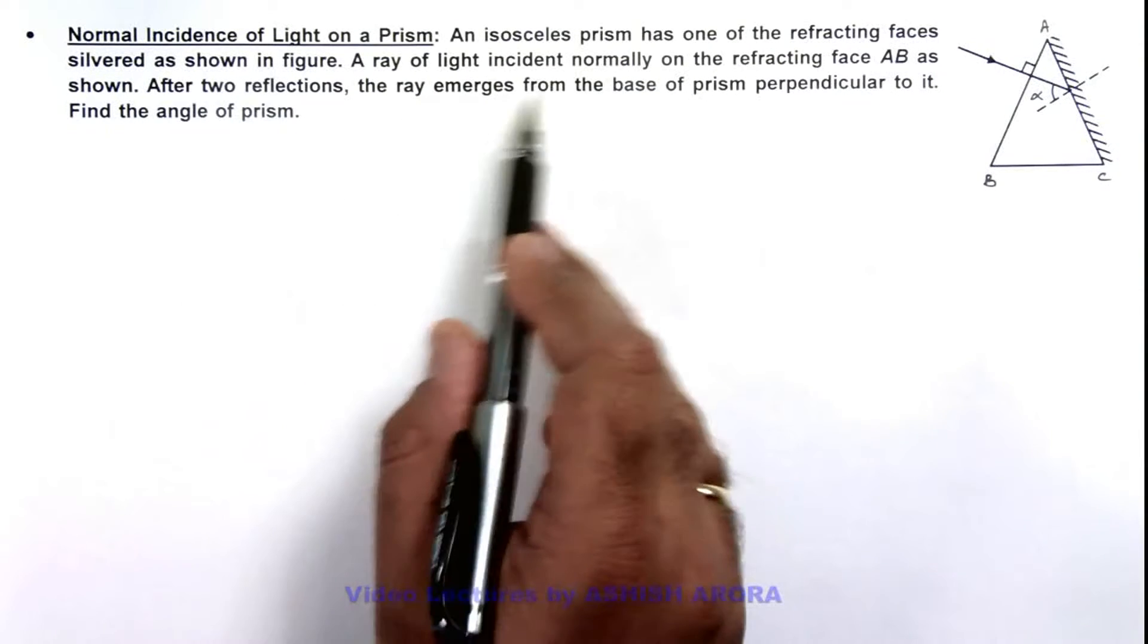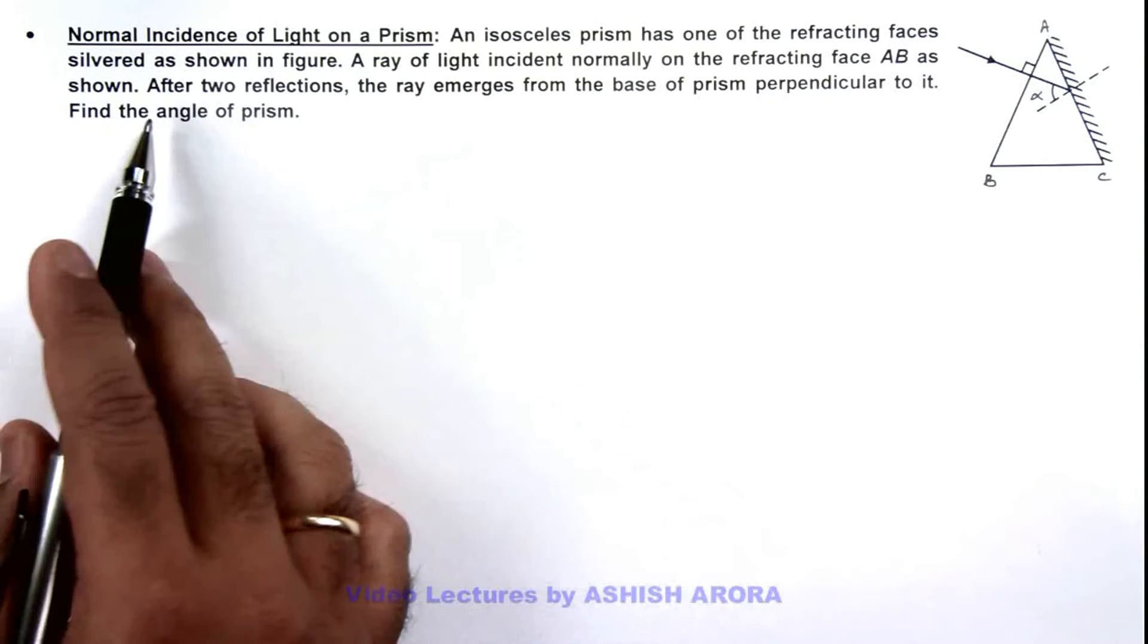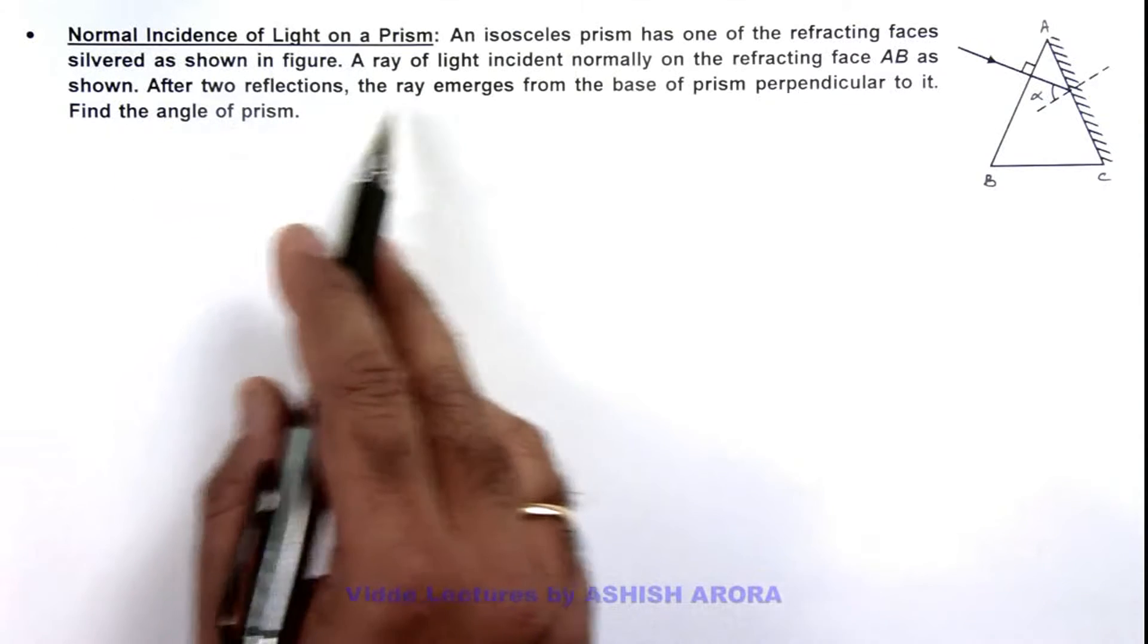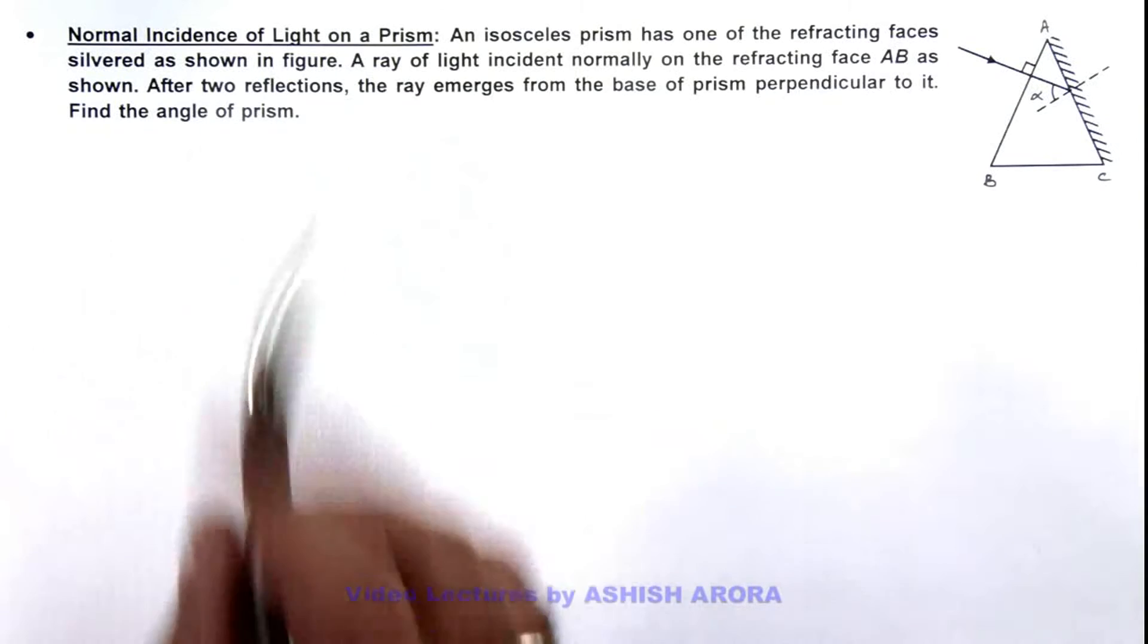A ray of light is incident normally on the refracting face AB, as we can see. It is also given that after two reflections the ray emerges from the base of prism perpendicular to it, and we are required to find the angle of prism.